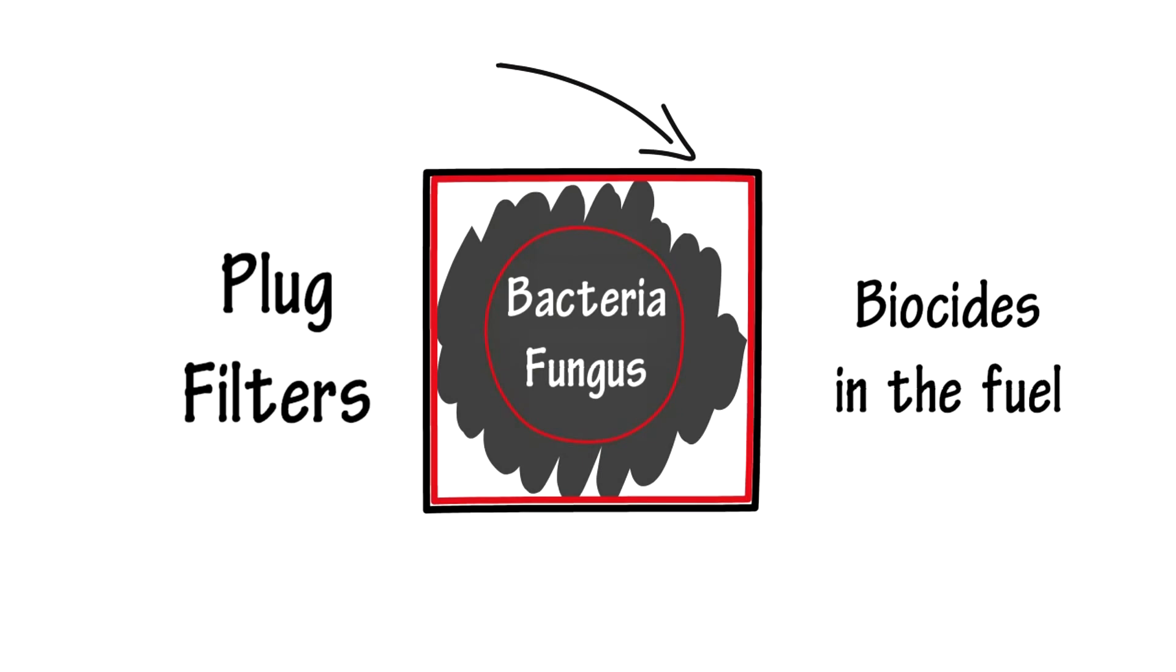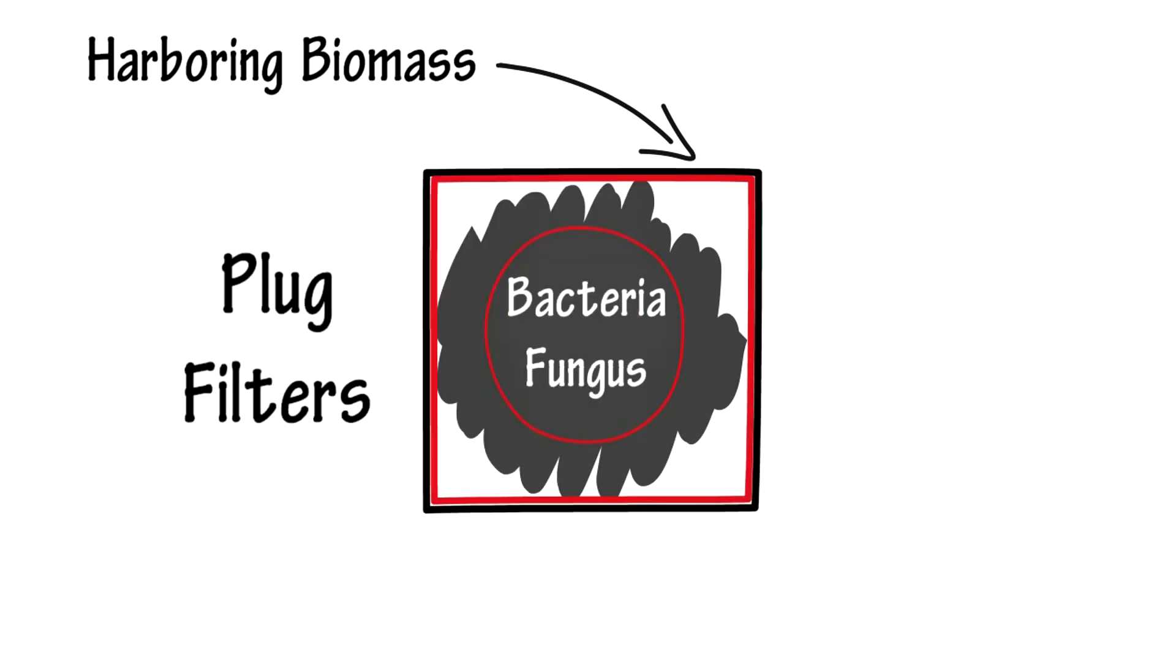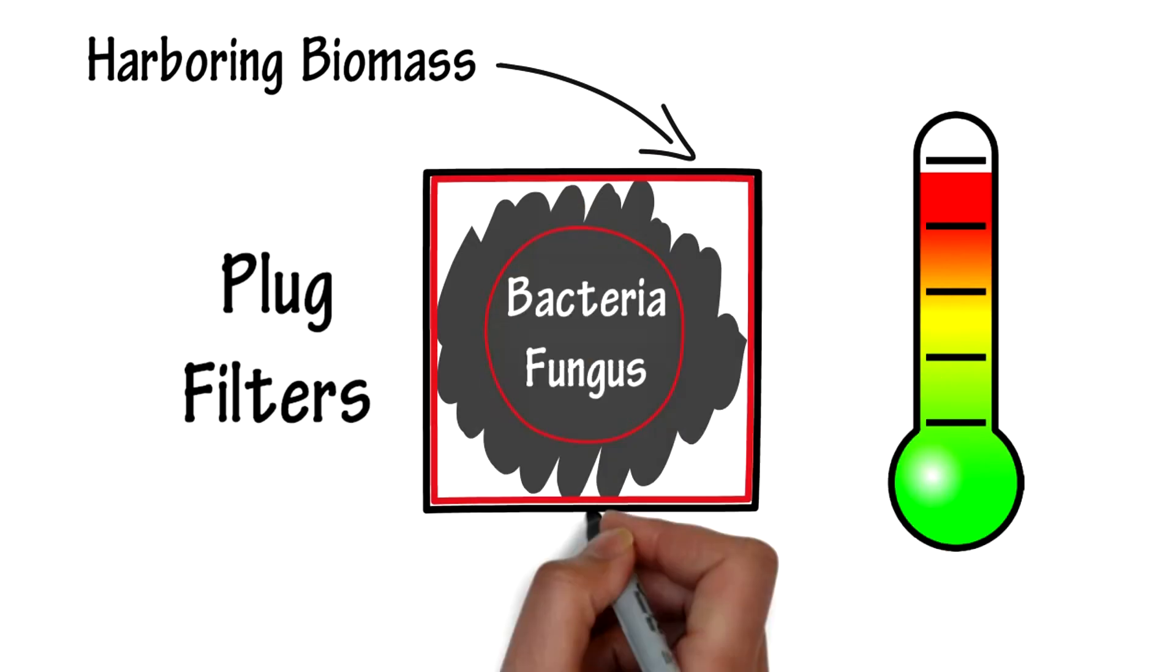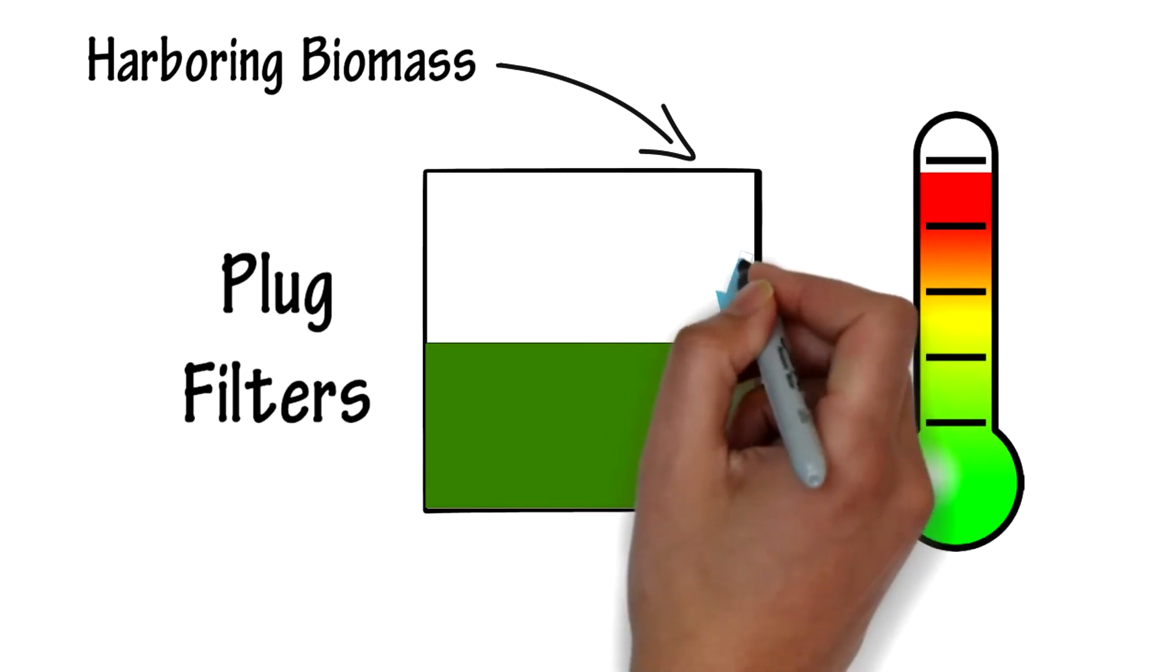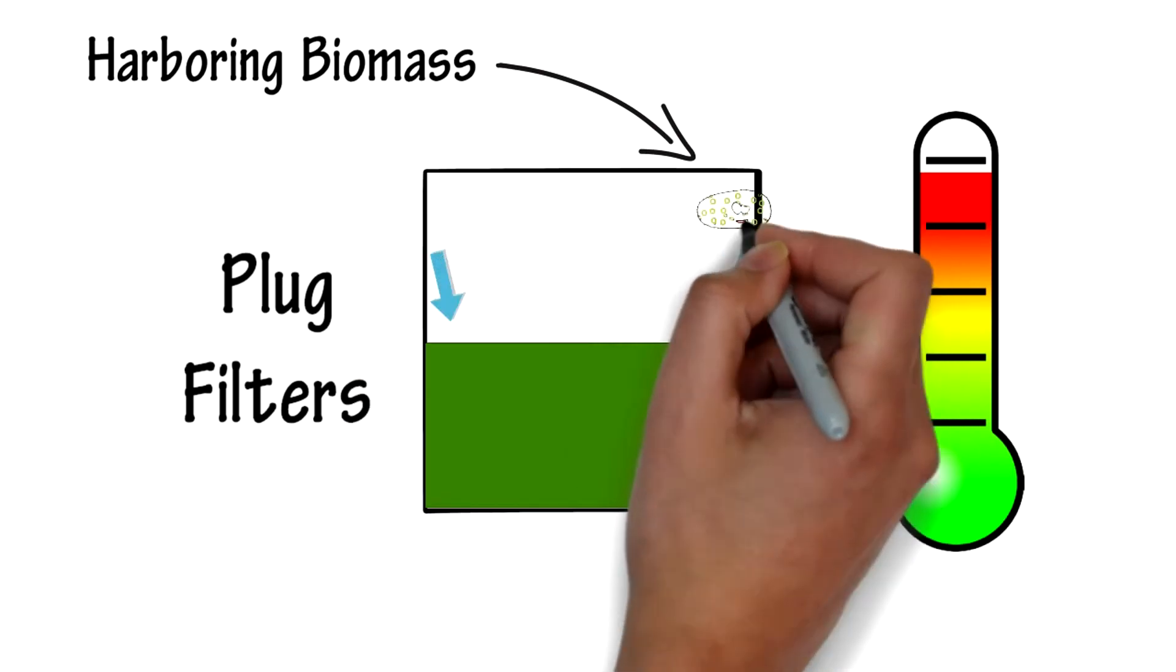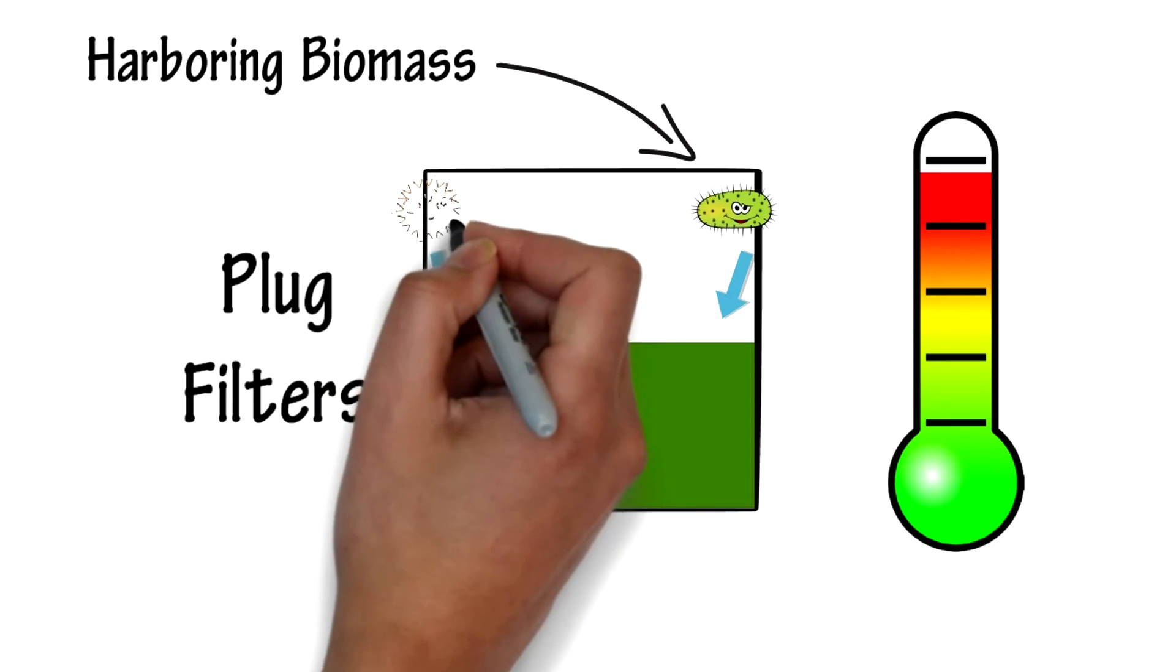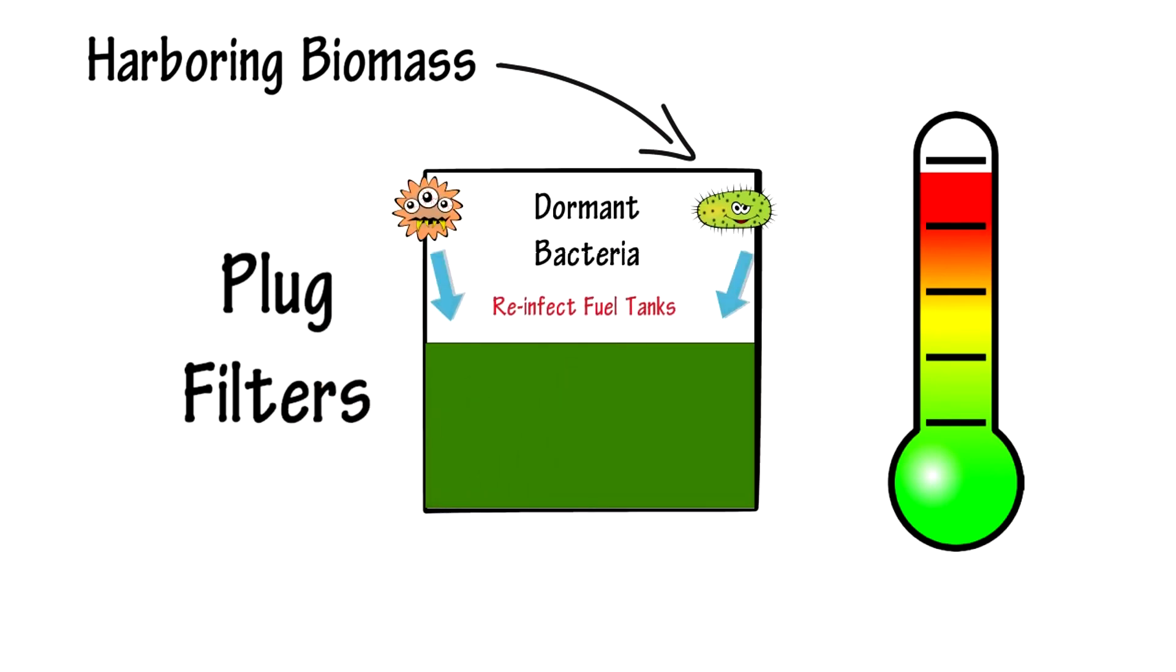Storage tank walls play roles in water collection and harboring biomass. All storage tanks collect water from simple changes in air temperature. The tank wall provides the surface for the water to condense and roll off down into the fuel. The tank walls are also excellent places for sticky biomass to accumulate, harboring dormant bacteria that can reinfect fuel tanks at any time.